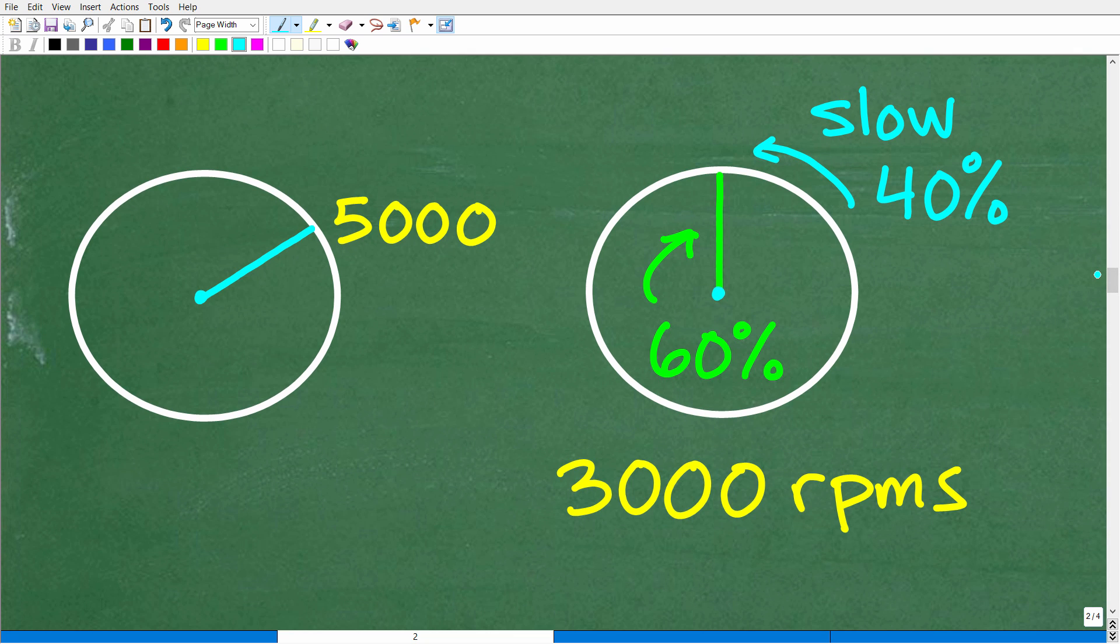So, here our engine was at 5,000 RPMs. We slow down 40% or maintain 60% of the speed, 60% of 5,000, which is 3,000 RPMs. Okay. So, now the engine is turning 3,000 revolutions per minute.